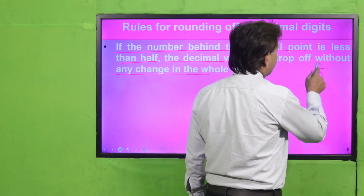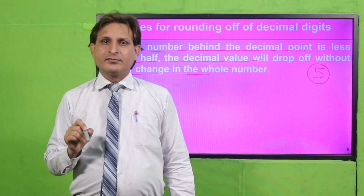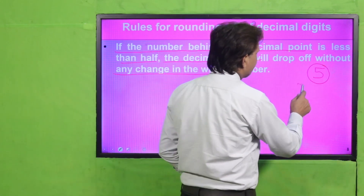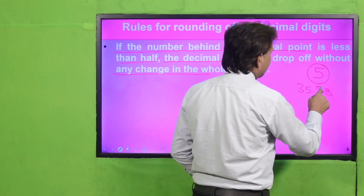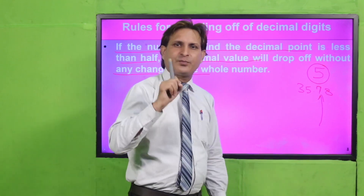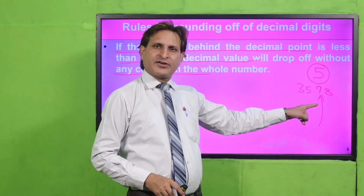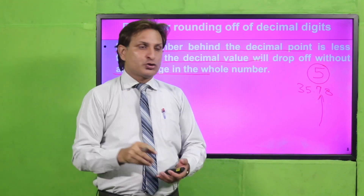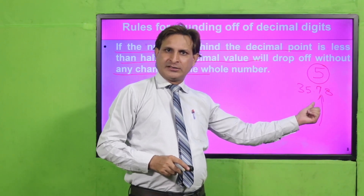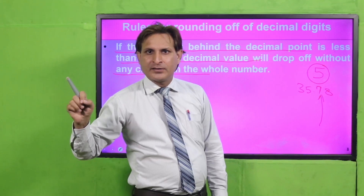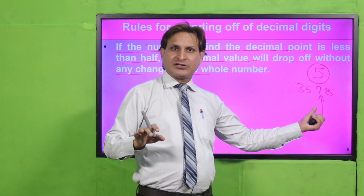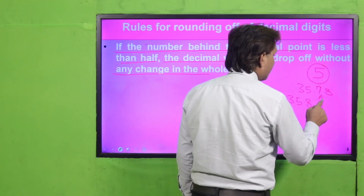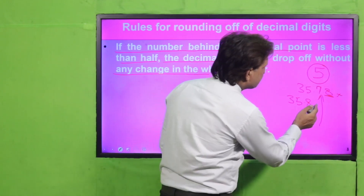If the number behind the decimal point is less than half, the decimal value will drop off without any change in the whole number. Half means 5 का figure आपने याद रखना है। Decimal point के बाद जिस number को round off करना है, उसको देखना है। Suppose एक number है 35.78। मैंने यह जो 7 है इसको round off करना है — यह tens के ऊपर round off होगा। इससे अगला जो number है, उसको check करूँगा कि वो 5 है या greater than 5 है। 5 या greater than 5 है तो पहले number में 1 add कर दूँगा। अगर 5 से less है, तो उसको छोड़ दूँगा और numbers as it is रहेंगे। यहाँ पर 8 है, तो 35.8 बन जाएगा।